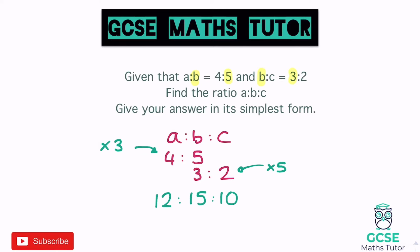Now I need to check whether this simplifies. The one I've written doesn't actually simplify. The reason mine doesn't simplify is I found the lowest common multiple of three and five. You could have found a different multiple — 30 or 60 — in which case you would have had to simplify at this point. But because I used the lowest common multiple of 15, this ratio doesn't simplify, so the final answer is 12 to 15 to 10.